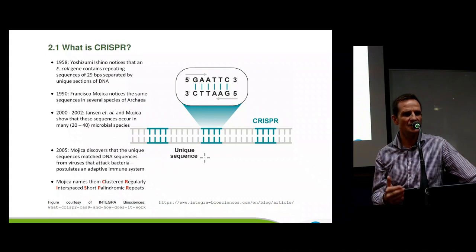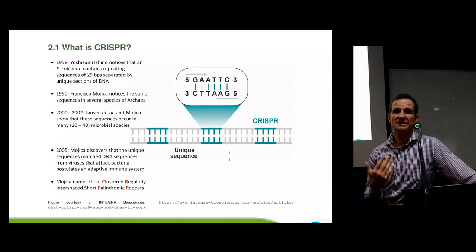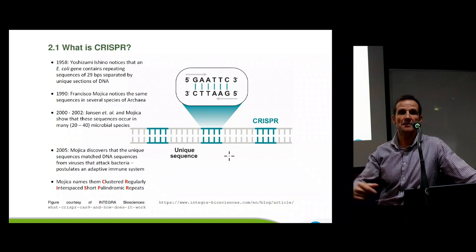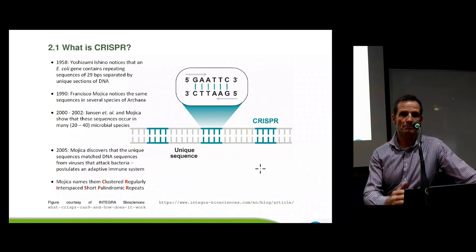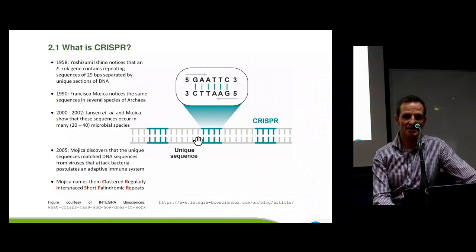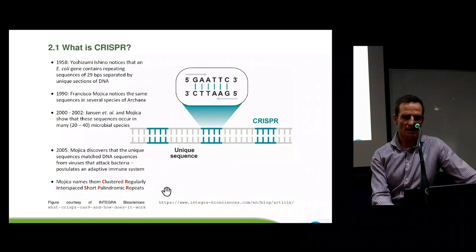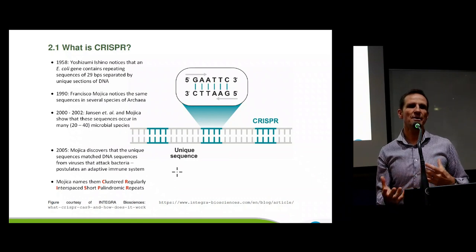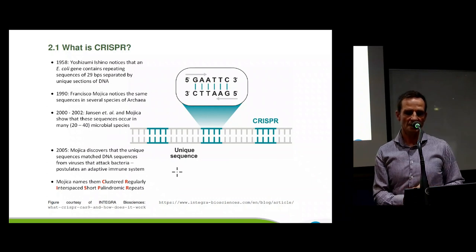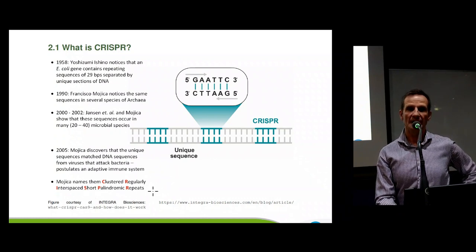This similarity across lots of different species sparked people's curiosity. Why are we seeing these strange repeat sequences separated by these unique sequences? People started to look at these unique sequences and realized they matched the sequences of DNA in viruses that attack bacteria — bacteriophages. They began to realize these unique sequences, which are all different, matched different bacteriophages but were separated by these same repeat sequences. In the early 2000s, Spanish researchers suggested this might be an immune system for bacteria. The same researcher named these sequences Clustered Regularly Interspersed Short Palindromic Repeats — CRISPR for short.